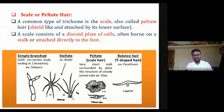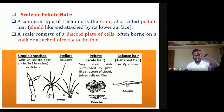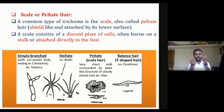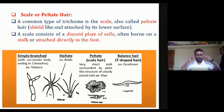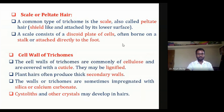Here we can see different types of trichome structures. There is a simple branched multicellular hair, and a stellate type seen in side view and top view. The peltate type is named for its plate or shield-like structure. There is also a T-shaped trichome that looks like a horn, similar to the fruit of Calotropis.